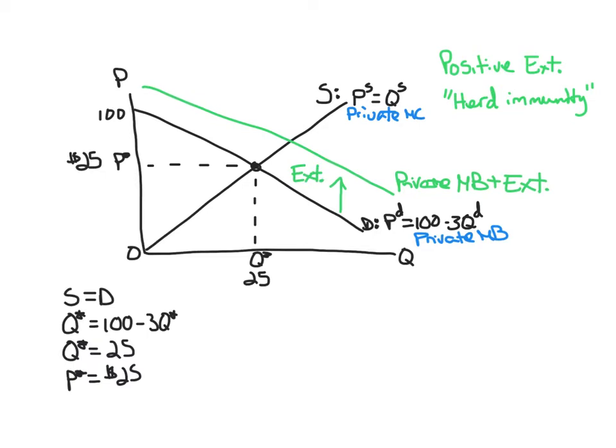The major challenge here is determining how big is that shift in the demand curve? How big is the externality in dollar terms? How much do we value that herd immunity that's generated by each person that gets a vaccine? Now, assuming we can figure out that value, the market really should be getting us to this equilibrium here.